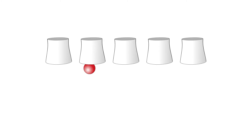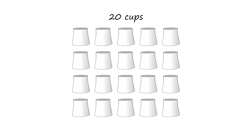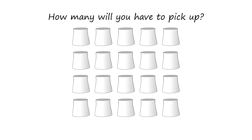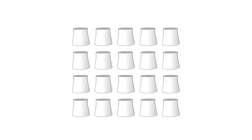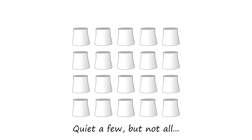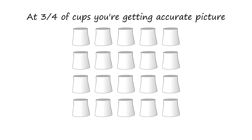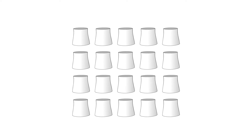So let's set the game up again with 20% of the cups hiding a ball, but now we have 20 cups. That means four of the cups are hiding a ball. So how many will you have to pick up before you can be reasonably accurate on guessing how many balls are hidden? The answer is quite a few, but not all of them. By the time you start passing half and are headed to three quarters of the cups, chances are you're getting a pretty accurate picture of how many balls are hidden.